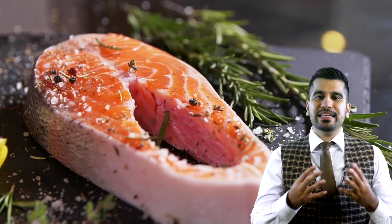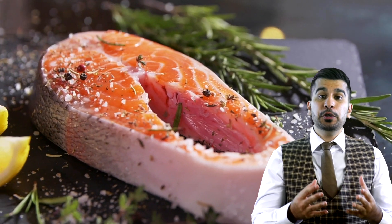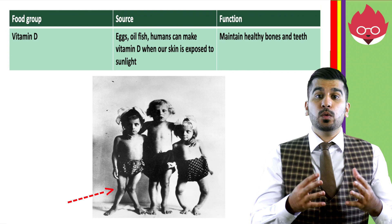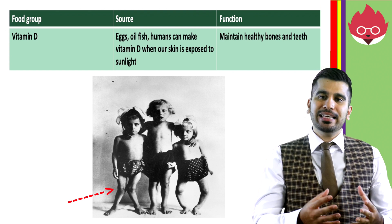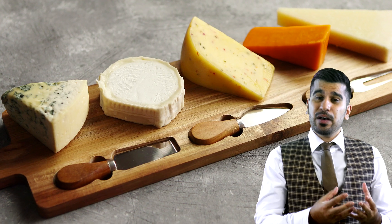Vitamin D, found in eggs and oily fish, or humans can make vitamin D when our skin is exposed to sunlight. This helps maintain healthy bones and teeth. A lack of vitamin D can cause a disease called rickets, which is when the bones weaken and don't form properly.